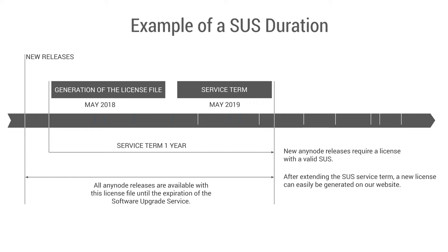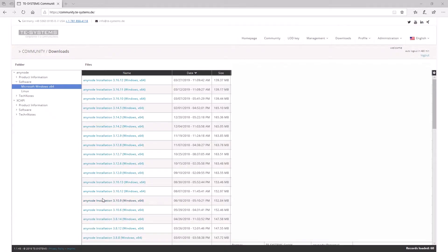We have the option to synchronize the software upgrade service, or SUS term, of all licenses on a system on request. More details later. During an ongoing service term, all new releases of Anynode can be downloaded and installed from the TE Systems community.